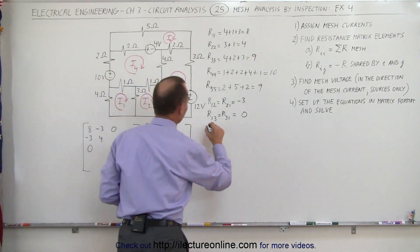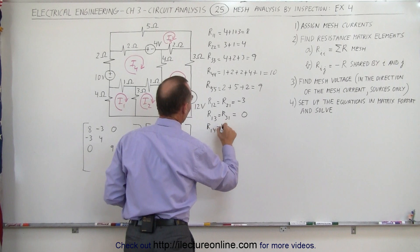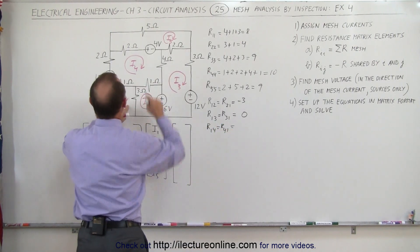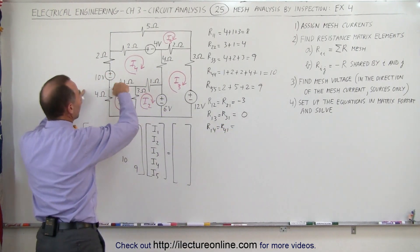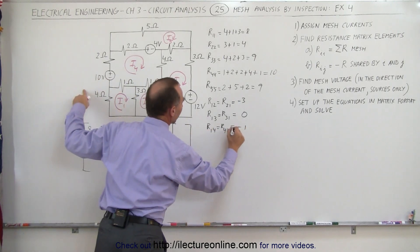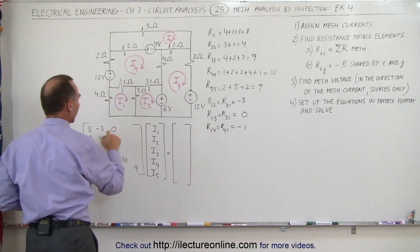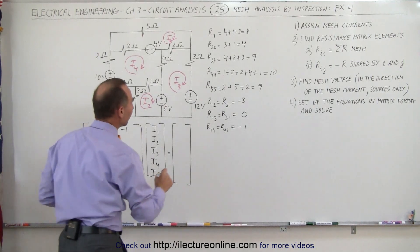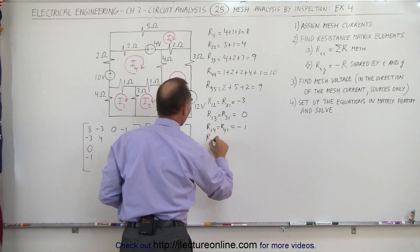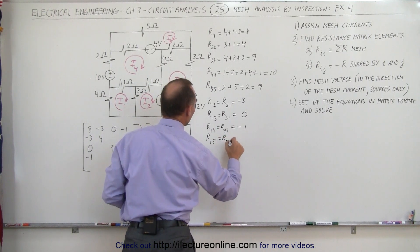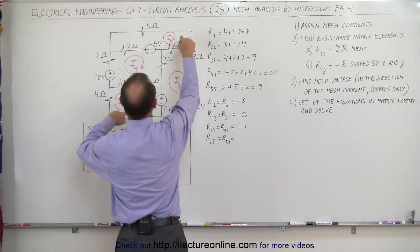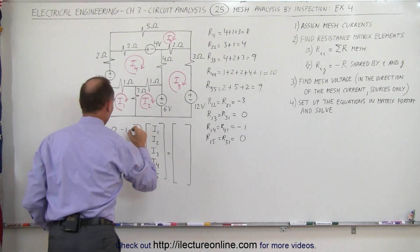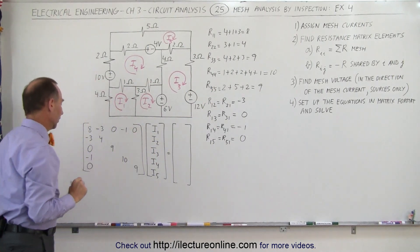How about R14? That's equal to R41. We have mesh 1 and mesh 4, they do share one resistor in common, that's going to be minus 1. Remember, always put a negative in front of that. So R14 is minus 1, R41 is minus 1. And finally between R1 and 5, that's equal to R5 and 1. Between 1 and 5 nothing's being shared, that's 0.